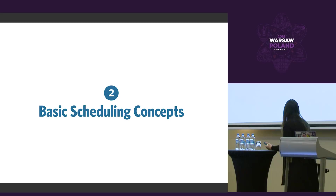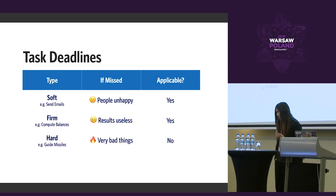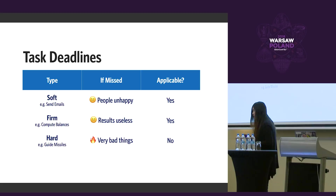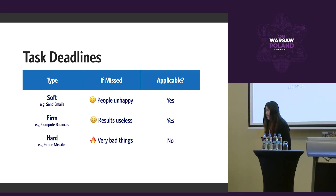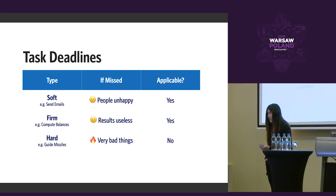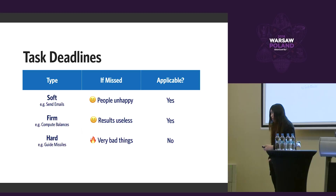Now let's talk about basic scheduling concepts. When you talk about tasks, the important question is: what is a deadline? Task deadlines can be soft, firm, or hard. A soft deadline is something that if missed, people may be unhappy but no real harm is done — most web application operations fall within that boundary. A firm deadline is like telling your boss you'll send a weekly report by Friday but missing it: the results may be useless but no harm is done, and in the worst case you just do it again.